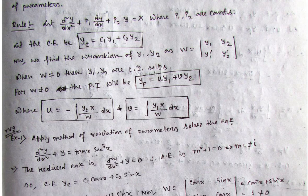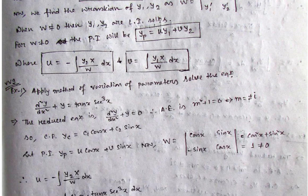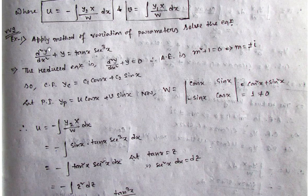Let us start with the problems. You cannot apply any shortcut rule — rule number 1 up to 5 — because a difficult type of function on the right-hand side has no particular rule in the D operator method. So whenever there is a difficult type of function on the right-hand side, that is when we use variation of parameters.